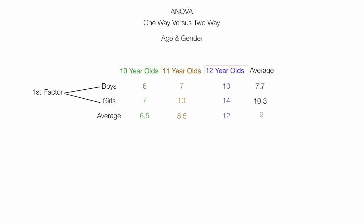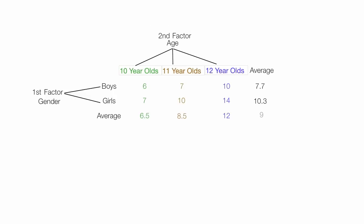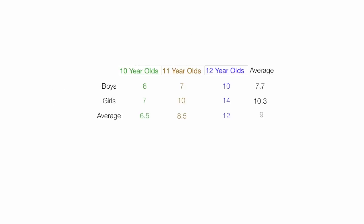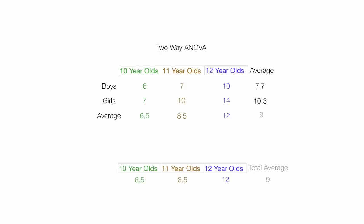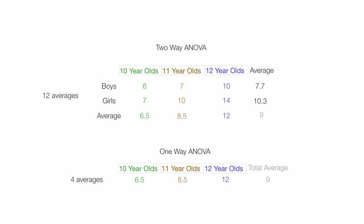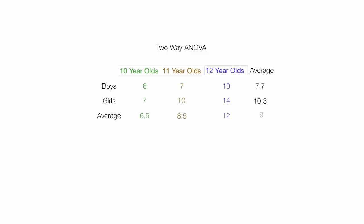My first factor is gender, and my second factor is age. It doesn't make a difference what I call my first or second factor — I could swap those if I wanted to. A two-way ANOVA is a lot more complicated than a one-way ANOVA. The average row for the two-way ANOVA is essentially the entire table for the one-way ANOVA. In a one-way ANOVA I work with four different averages, while in a two-way ANOVA I have 12 averages. Having data organized into this nice table makes it a lot easier to work with and understand.